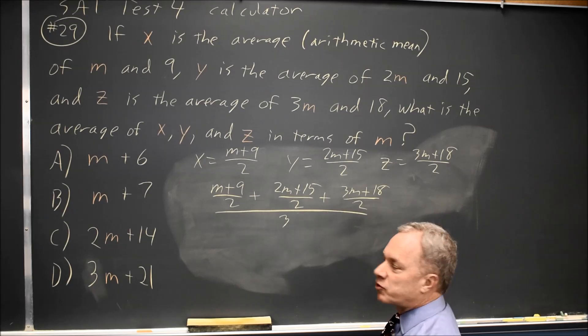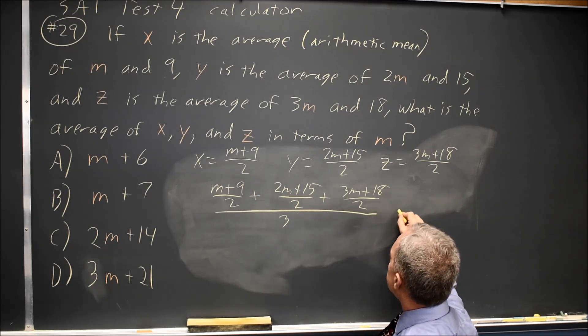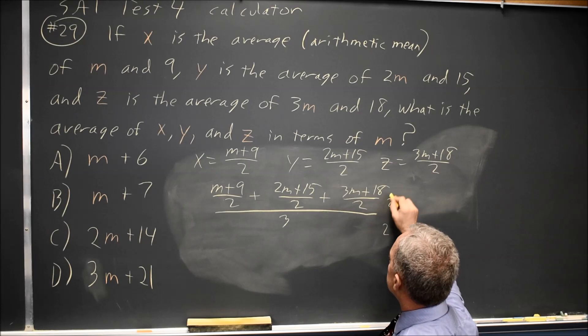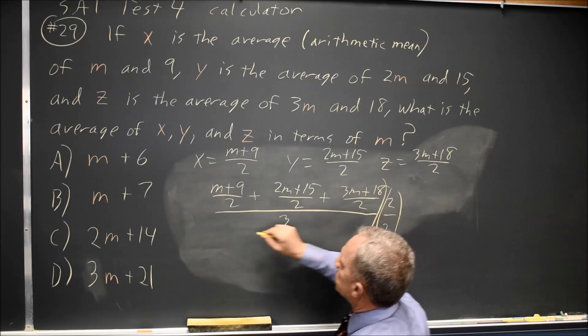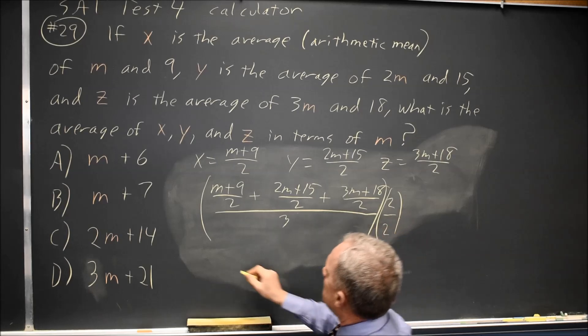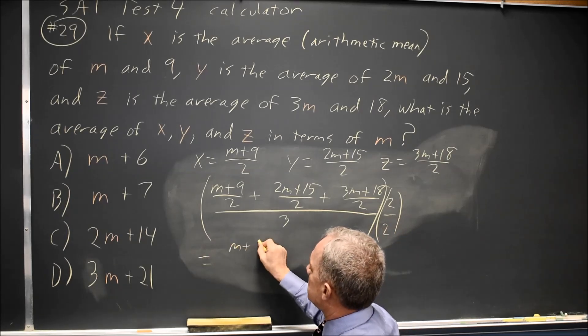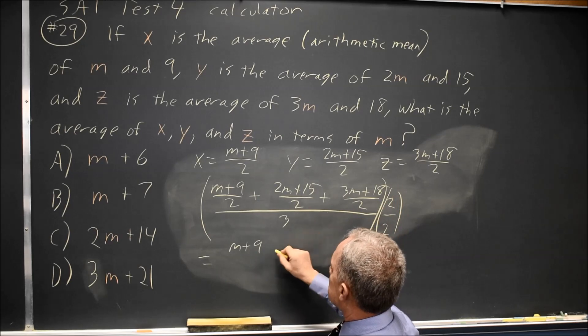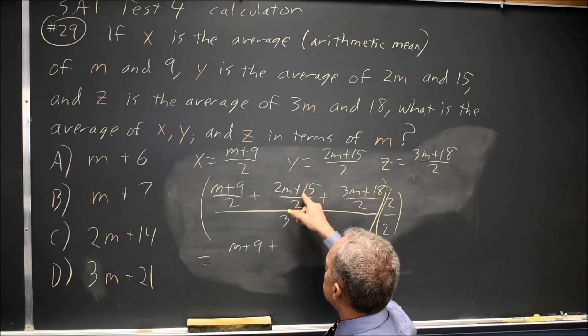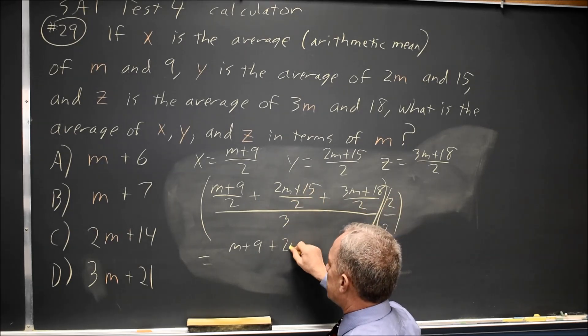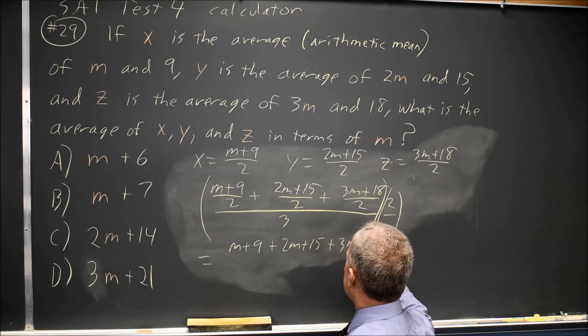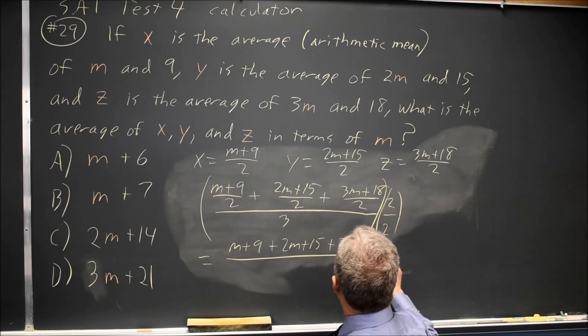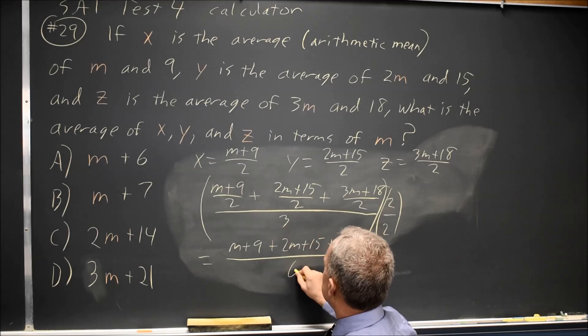I don't like compound fractions where I have fractions in the numerator, so let's multiply by 2 halves. Anything over itself is 1, so I'm allowed to multiply by 2 over 2. That gives me M plus 9 over 2 times 2, which is M plus 9. 2M plus 15 divided by 2 and multiplied by 2 is 2M plus 15. Similarly, plus 3M plus 18. My denominator is 3 times 2, which is 6.